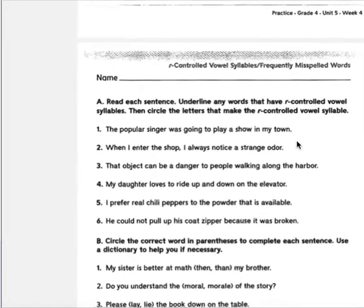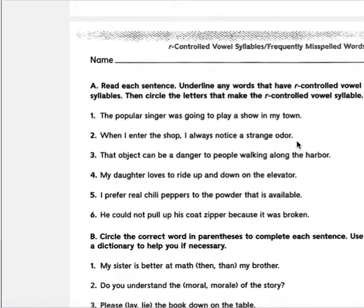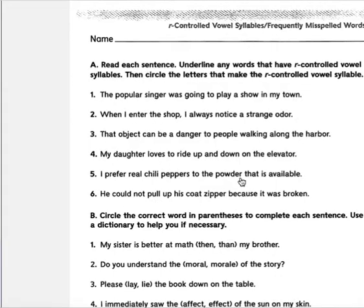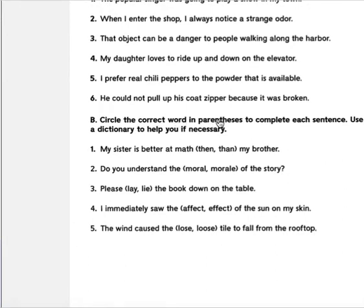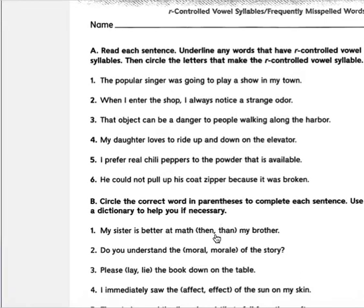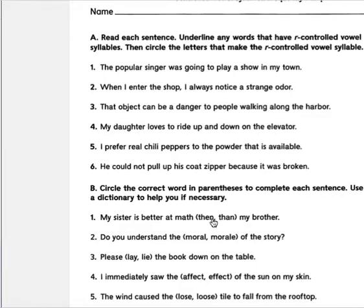Then we have your spelling. This is more R-controlled vowel syllables. You see the word 'popular'? The A-R is an R-controlled vowel syllable. It's attached to the vowel as well. And then you're going to be working with frequently misspelled words. Circle the correct word in parentheses to complete each sentence; use the dictionary to help you if necessary because you have words like 'then' and 'than,' 'morale' and 'moral,' 'lay' and 'lie,' 'affect' and 'effect,' 'loose' and 'lose.' Some of these are homophones; for some you need to know the difference.